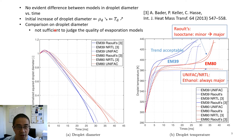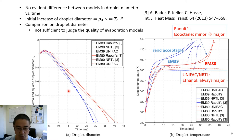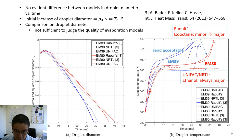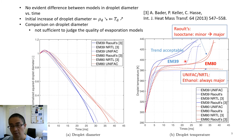Comparing Raoult's law, NRTL predictions from reference, and our UNIFAC results, there is no evident difference between models in droplet diameter predictions over time. This shows that comparison on droplet diameter alone is unfortunately not sufficient to judge the quality of evaporation models — we will show this more clearly in later plots. For droplet temperature with ethanol mass fraction 39%, the trend is acceptable between Raoult's law, UNIFAC, and NRTL — qualitatively it is acceptable.